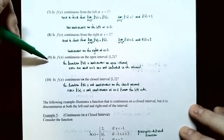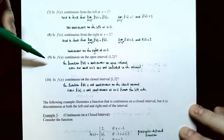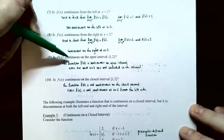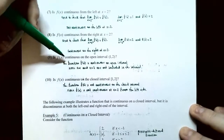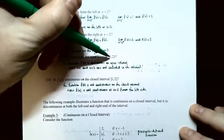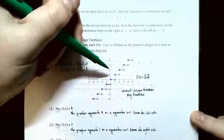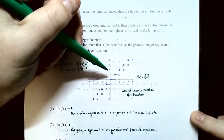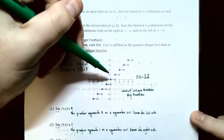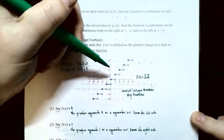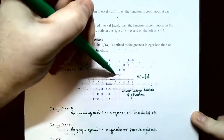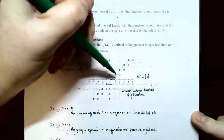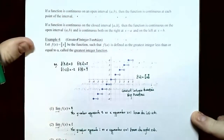Number 9: Is f(x) continuous on the open interval (1, 2)? That means: is the function continuous at every x value between 1 and 2? Looking at the graph between x equals 1 and x equals 2, not including the endpoints, there are no jumps, holes, or vertical asymptotes. So the function is continuous on the open interval (1, 2).